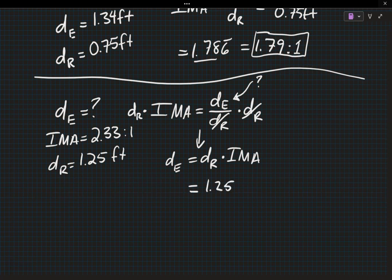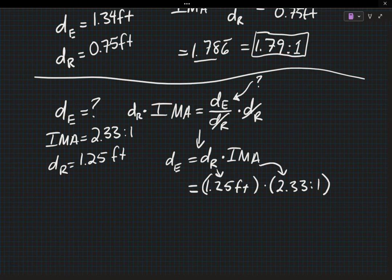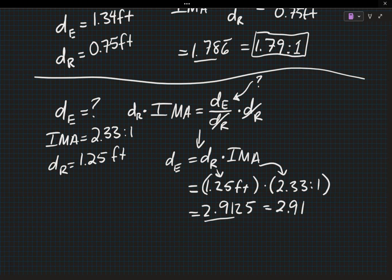We can go ahead and plug in our numbers. Notice that I didn't plug in numbers until I got my algebraic equation for DE. Please make a good practice of doing that. That will prevent you from making mistakes or putting numbers in the wrong place. So DR is equal to 1.25 feet. I'm keeping my units with my numbers so that I know what that number is supposed to be. I'm going to multiply that by IMA, so 2.33 to 1. I'm putting my numbers in parentheses so that I can remember where those numbers came from. 1.25 times 2.33 gives me 2.9125, which I'm going to round to three digits, 2.91. My units for distance are going to be feet and that is our effort distance.